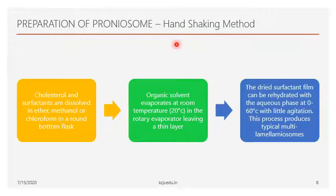In the hand shaking method, the first step is to take cholesterol and non-ionic surfactants and dissolve them in organic solvents such as ether, methanol, or chloroform in a round-bottom flask. The round-bottom flask is connected to a rotary evaporator, which spins to leave a thin layer. The solution is evaporated at 20 degrees Celsius with the rpm maintained at around 50 to 60.